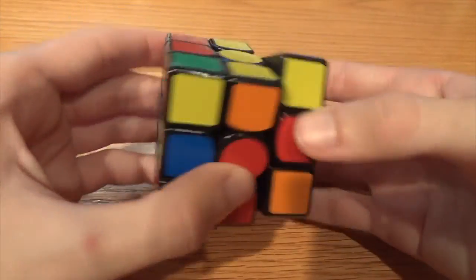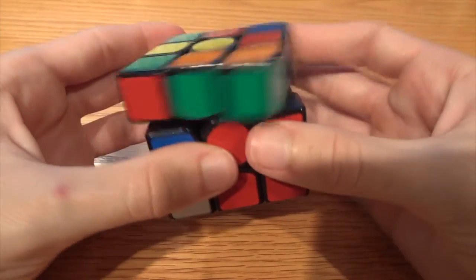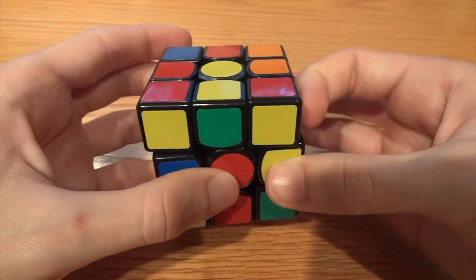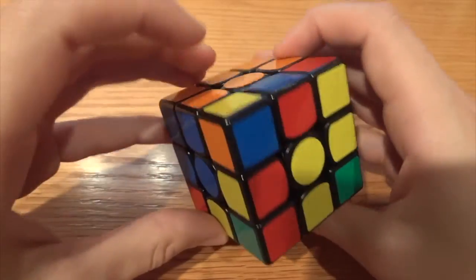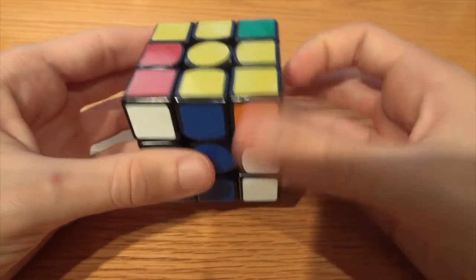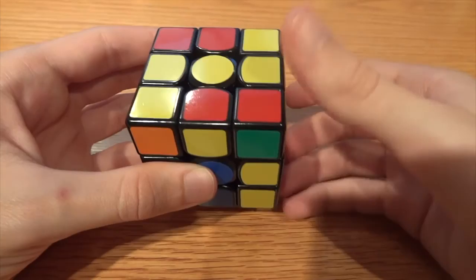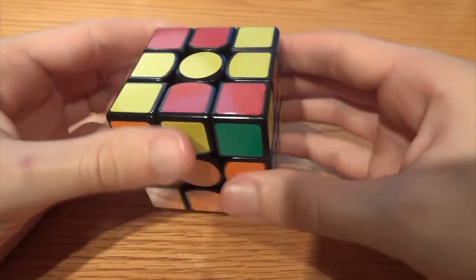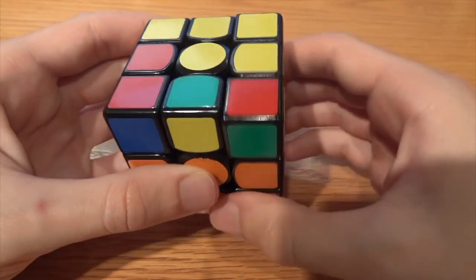Third F2L pair right here, also backslot. And then my fourth F2L pair is going to be right here. There we go, alright.